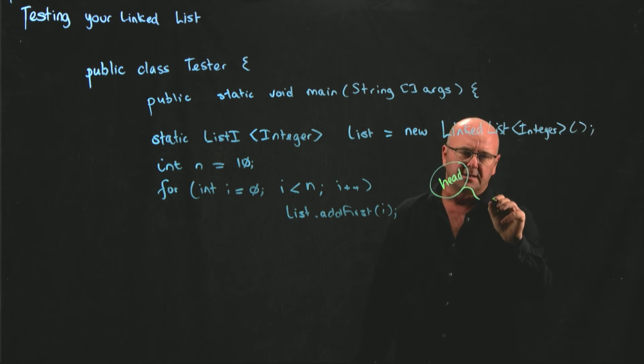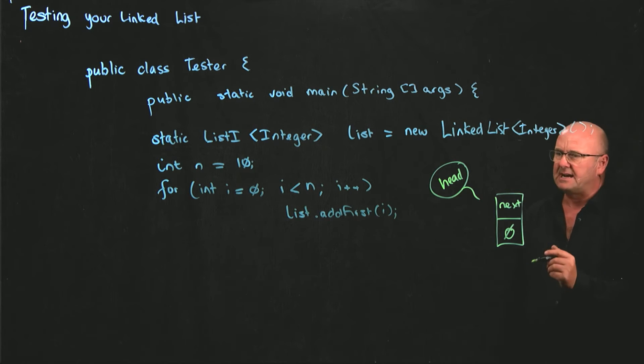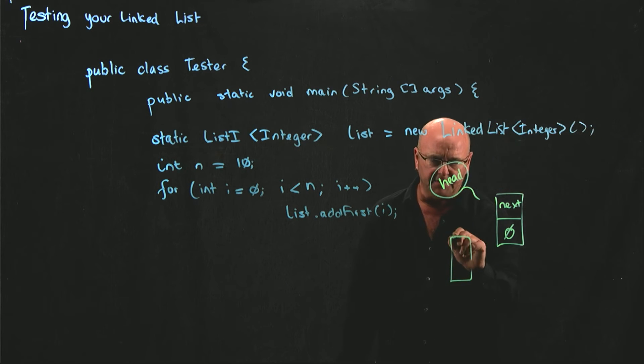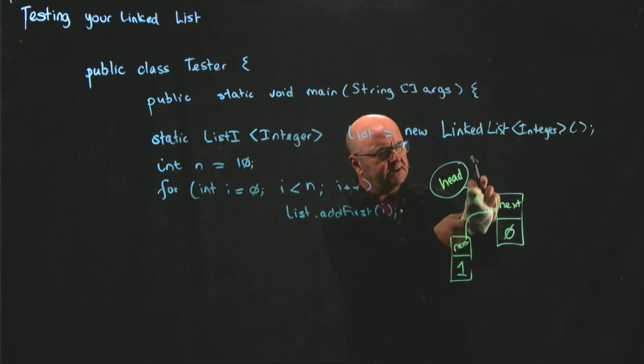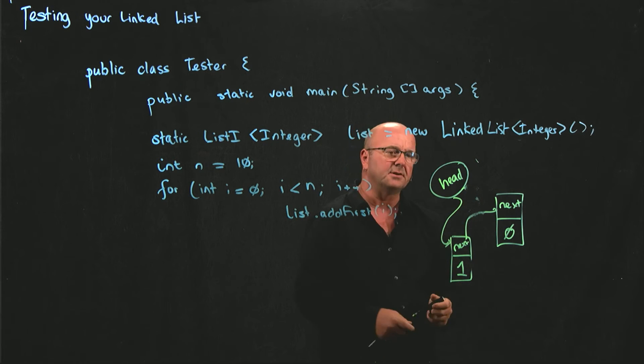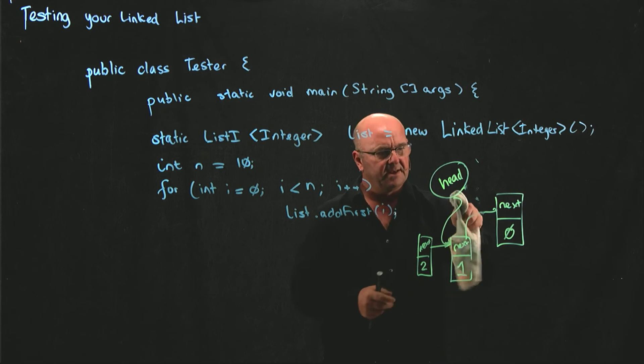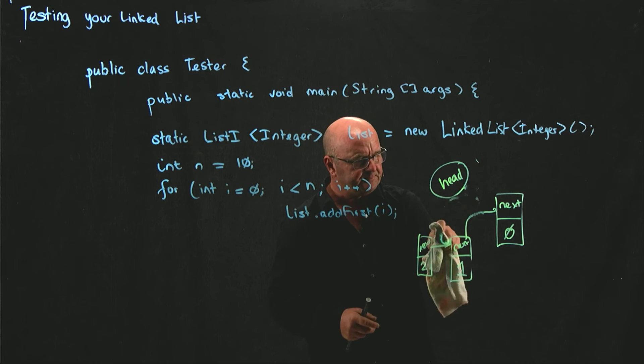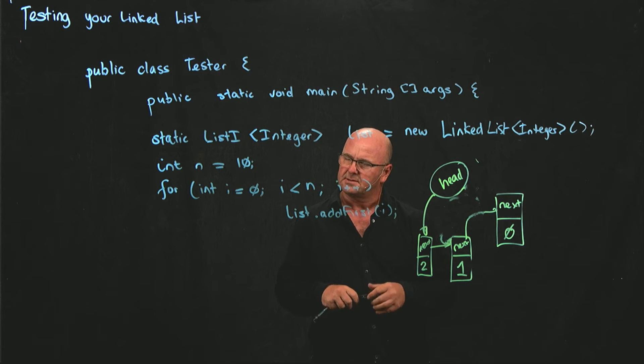Here's our list. When we add, let's say we add our zero, we add our zero to the linked list. Now we're going to do an add first. When we add first, remember we create a new node. So our node will be one. Here's next. We make next point to our existing node and we update the head pointer so that head points to our new node. Now if we make a new node for number two, we make next point to our existing node and we update our head pointer so that head points to our new node.